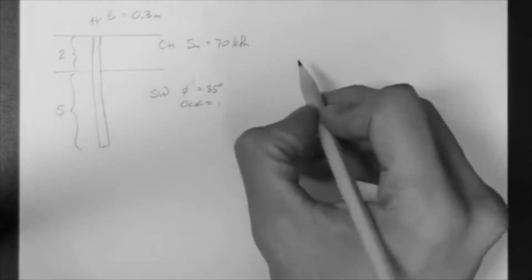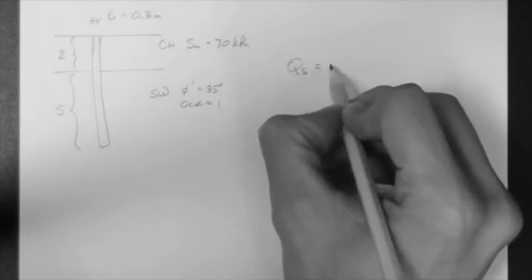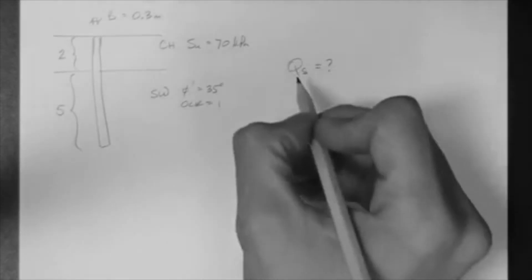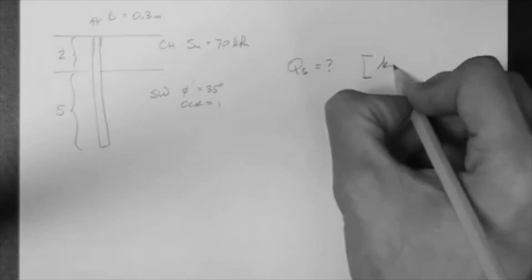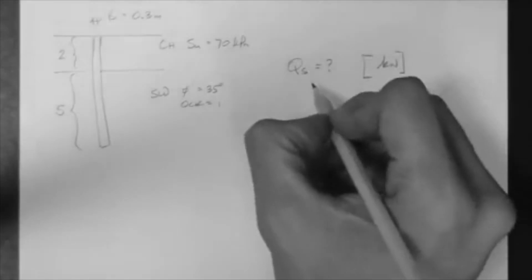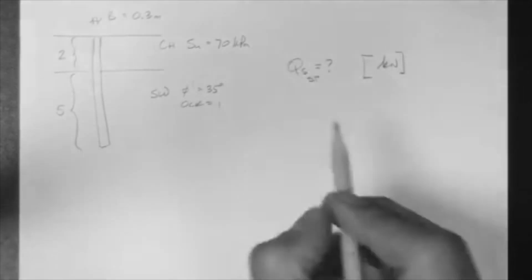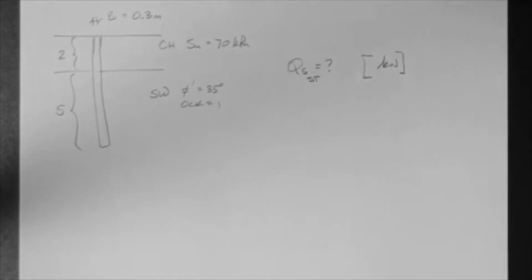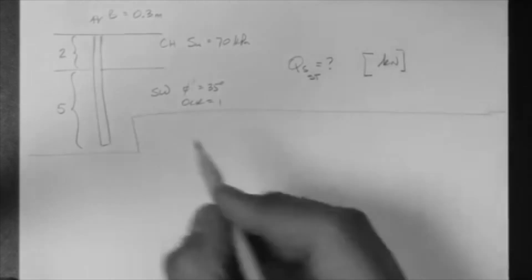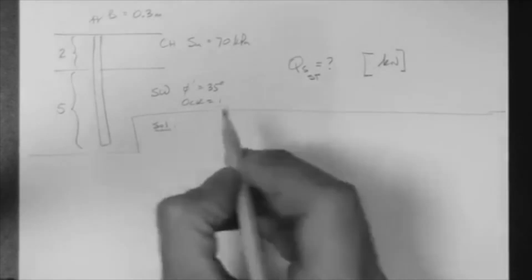So here what we need to get is QS, that is the side-friction capacity. Remember that the capacity has units of kN. And we're going to look for the short-term QS, the short-term capacity.